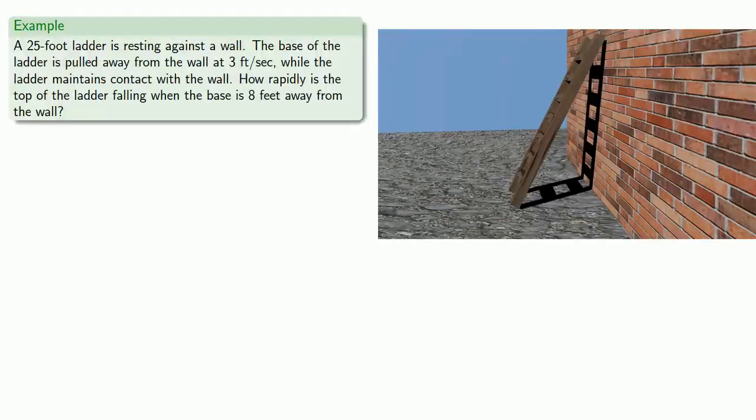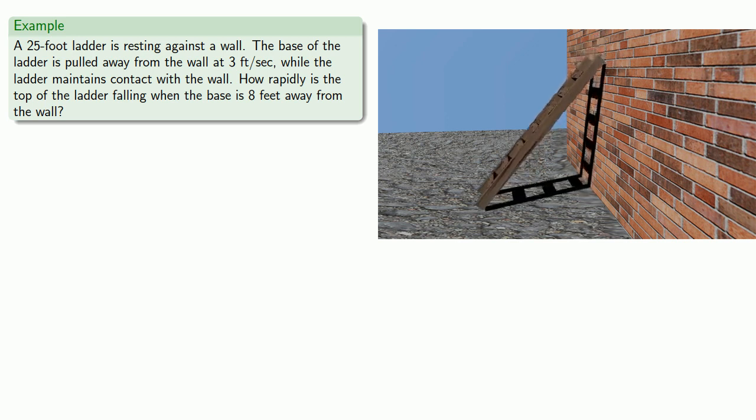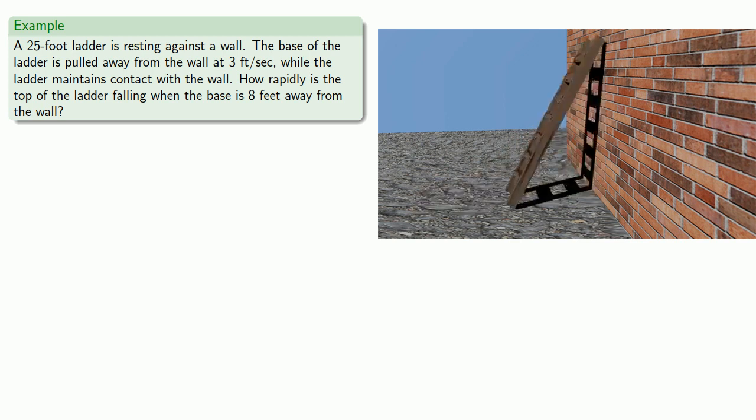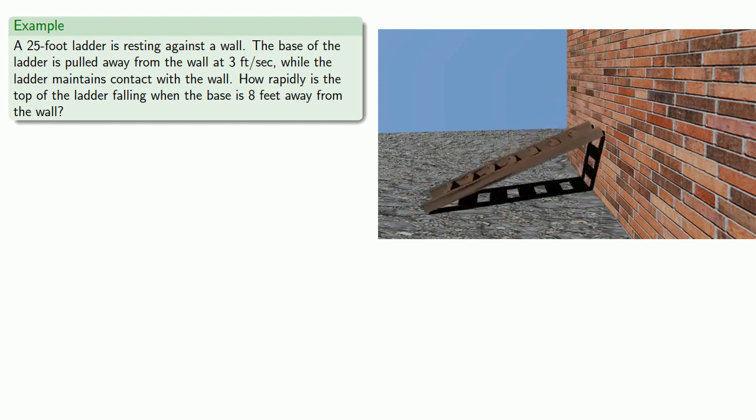So here's the situation. We have a 25-foot ladder resting against the wall and the base of the ladder is moving away from the wall at 3 feet per second while the ladder itself maintains contact with the wall. So how rapidly is the top of the ladder falling when the base is 8 feet away from the top of the wall?